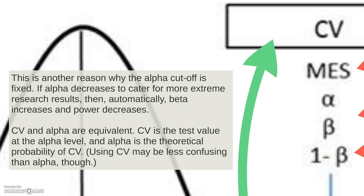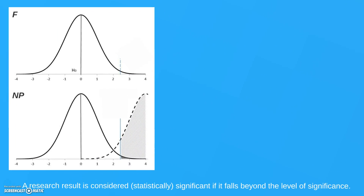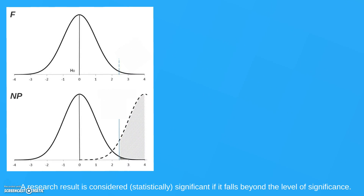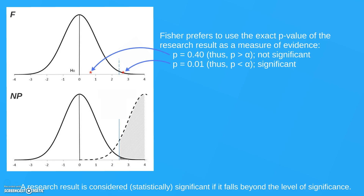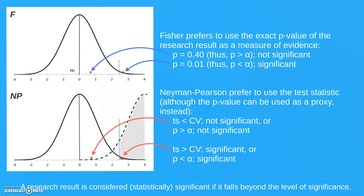If you move alpha to cater for more extreme results, automatically beta increases and power decreases. Also, the critical value and alpha are equivalents, so you could use one or the other. Another difference is that the research result is considered statistically significant if it falls beyond the level of significance. For Fisher, he prefers to use the exact p-value because it is a direct measure of evidence against the null hypothesis — the more significant, the better. But Neyman-Pearson only needs to make a decision: if the result falls beyond the threshold, you accept the alternative hypothesis. You may call it significant or not significant as well.